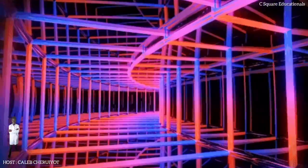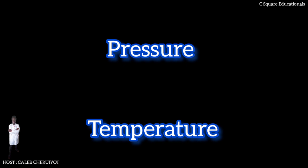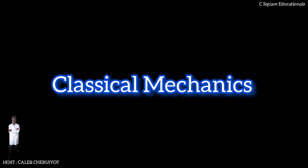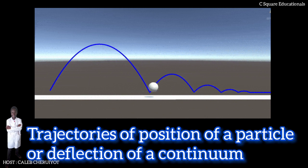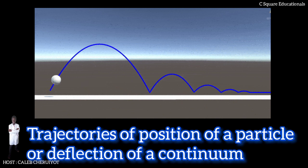Once the velocity field is calculated, other quantities of interest such as pressure or temperature may be found using dynamical equations and relations. It is different from what one normally sees in classical mechanics where solutions are typically trajectories of position of a particle or deflection of a continuum. Studying velocity instead of position makes more sense for a fluid, although for visualization purposes one can compute various trajectories.